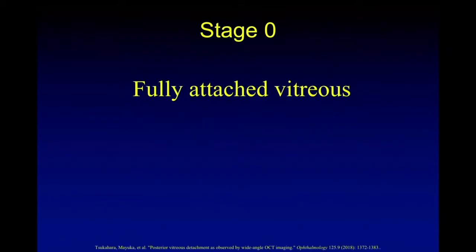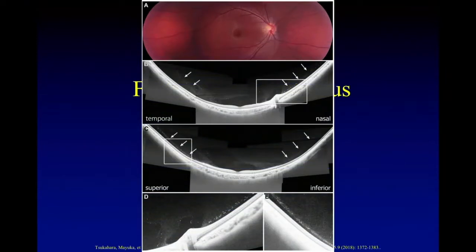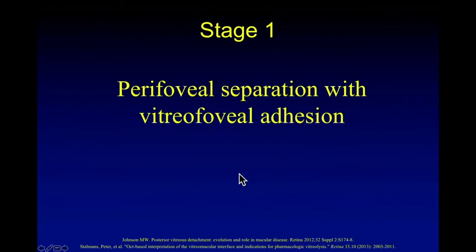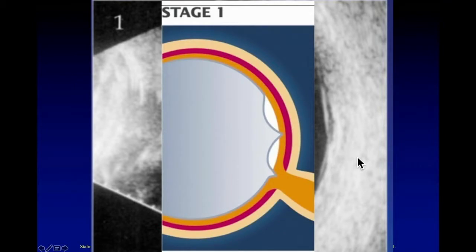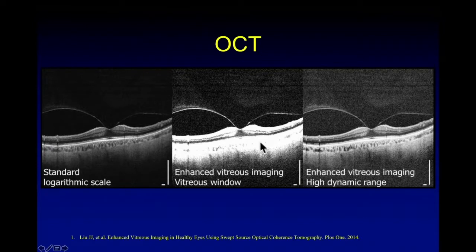Let's look at stages of PVD. Stage 0 is no PVD — fully attached vitreous, as in a young person — the arrow shows that the vitreous is attached to the retina. Stage 1 is separation of perifoveal vitreous, but in the center of the fovea there is attachment. On B-scan, there is attachment at the fovea and vitreous is separated on two sides. In a montage, you see again separation around the fovea, attachment on the fovea and on the disc. On OCT, attachment at the fovea and separation in other areas — this is stage 1.